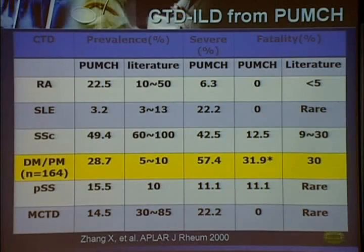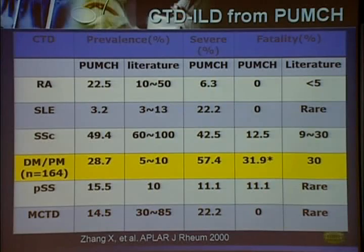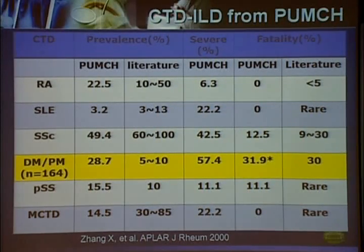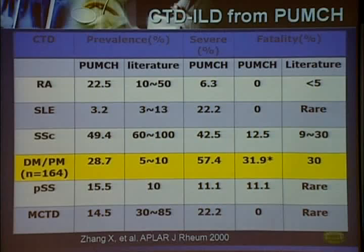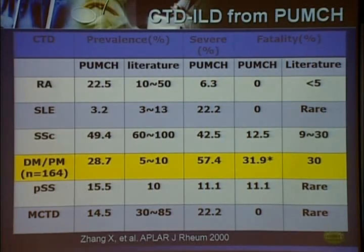Data from PUMCH hospital in Beijing, a tertiary referral center in mainland China, shows that nearly 30% of admitted myositis patients will have clinically significant interstitial lung disease, and more than half of those are very severe with type 1 respiratory failure. This is life-threatening, as more than 30% of them died within one year of diagnosis.